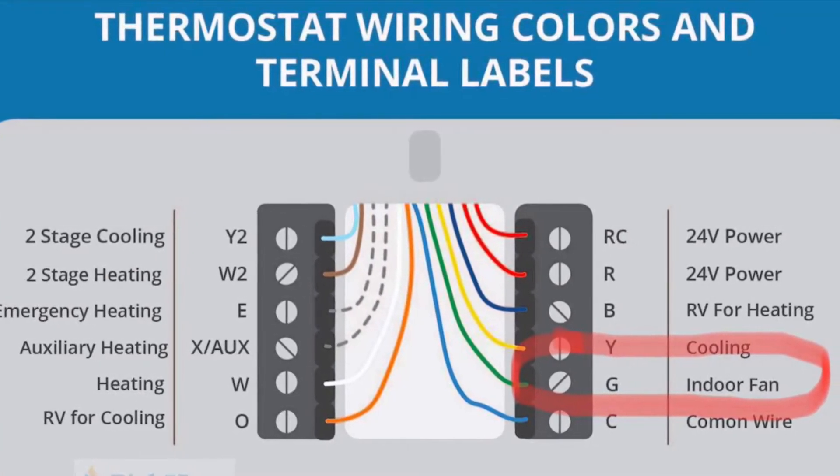I have two thermostats — one on the second floor, one on the first floor. The second floor does not have the fan G wire hooked up to it. The G wire controls the fan on and off. You can use it on a thermostat to turn your fan on manually if you just want air to circulate throughout your house without the heat or air conditioning on. Most thermostats have that capability, but I did not hook that up on my second floor — there's a technical reason I won't get into.